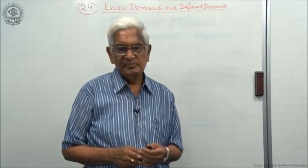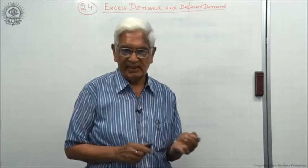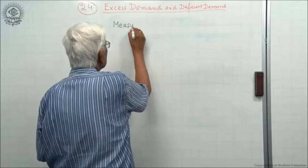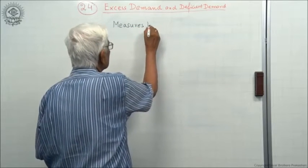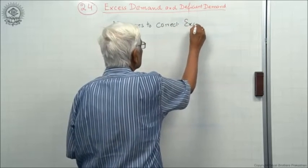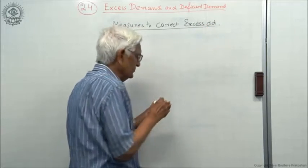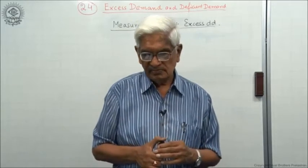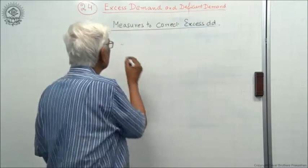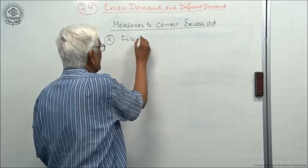First we take up measures to correct excess demand. Remember, excess demand is also called inflationary gap. First we take up the first category: fiscal measures.